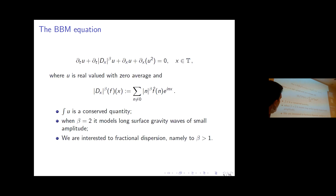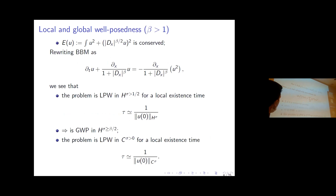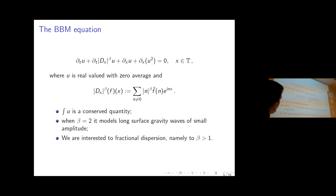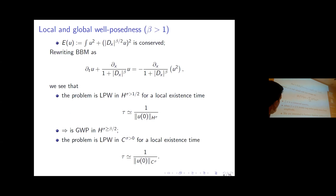This system is Hamiltonian, so if we have some conserved quantity we may hope to build an invariant measure. The quantity we want to use is what we call the energy, which is essentially the H^{beta/2} norm of the solution. It is conserved because if you take the scalar product of the equation in L^2 against u and integrate by parts, the nonlinear terms don't contribute as they are total derivatives.